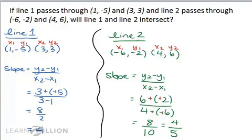So the slope of line 1 is 4, and the slope of line 2 is 4 fifths. These are different, so yes, they do intersect. So now you know how to determine if two lines intersect when given two pairs of coordinate points.